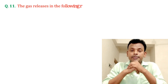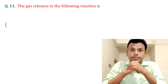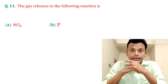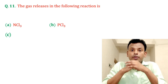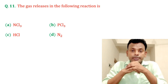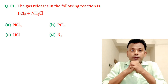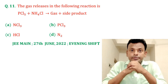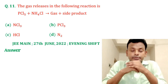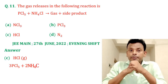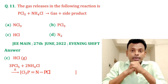Question number eleven: the gas released in the following reaction — PCl5 plus NH4Cl gives gas plus side product. Options A, B, C, and D are given. Answer: option C is correct, that is HCl.